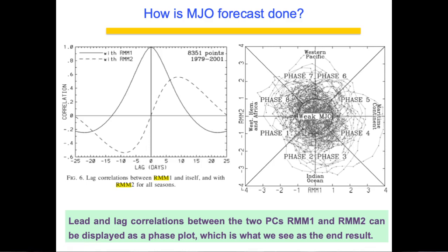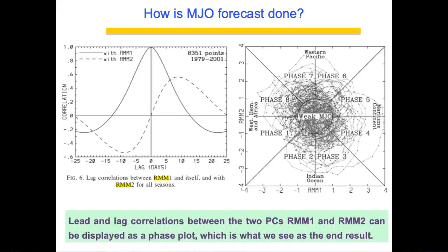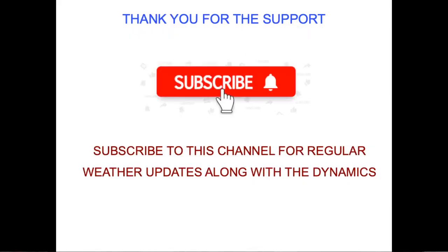In a nutshell, MJO forecasting uses three datasets: 200 hPa zonal wind, 850 hPa zonal wind, and outgoing longwave radiation. All three are combined and run through an EOF — Empirical Orthogonal Function — code. You get different principal components, and only the first two are important because they fully represent the MJO amplitude and nature. When you perform the lead-lag correlation you get the phase plot.